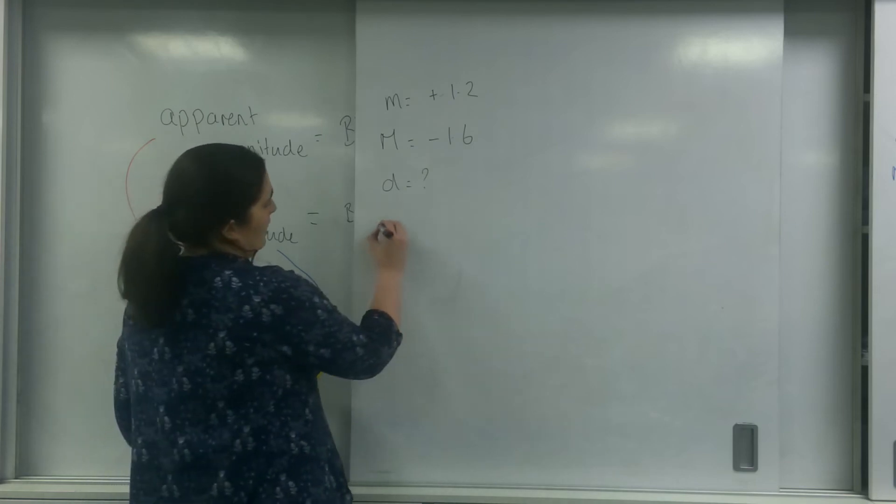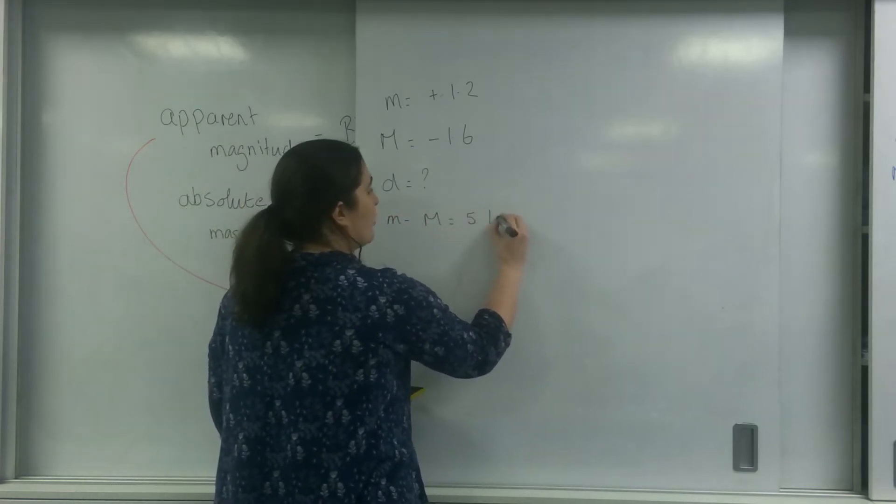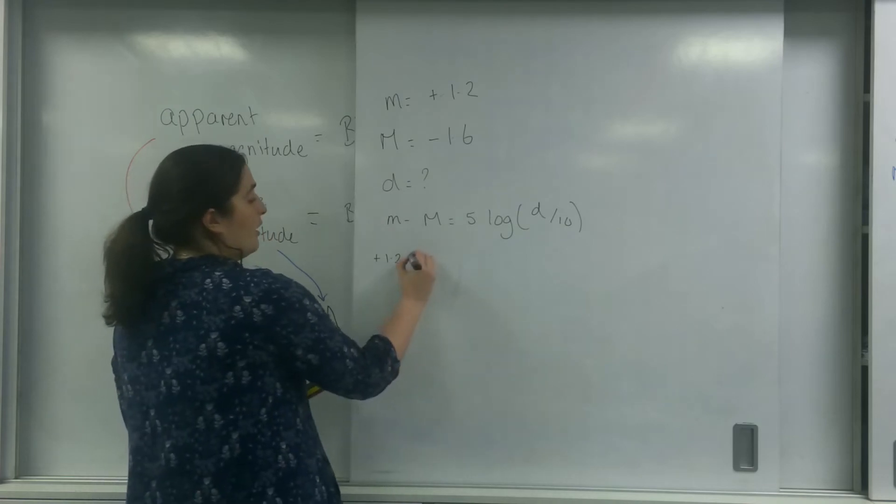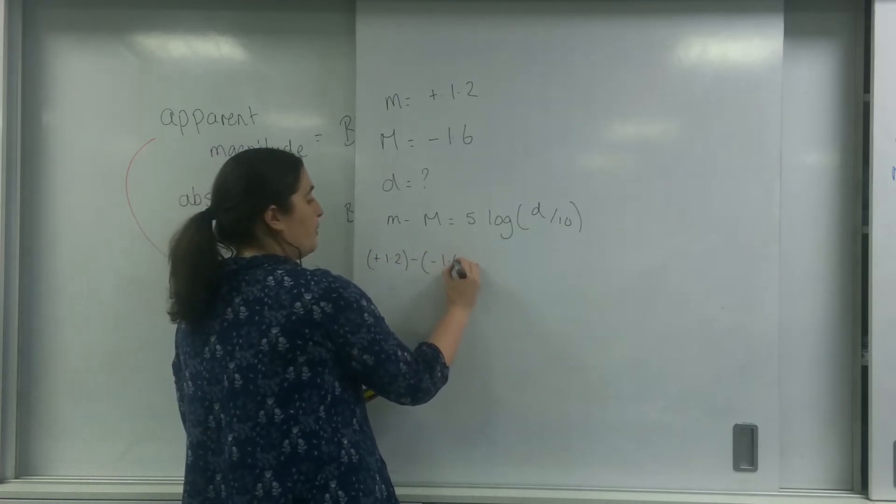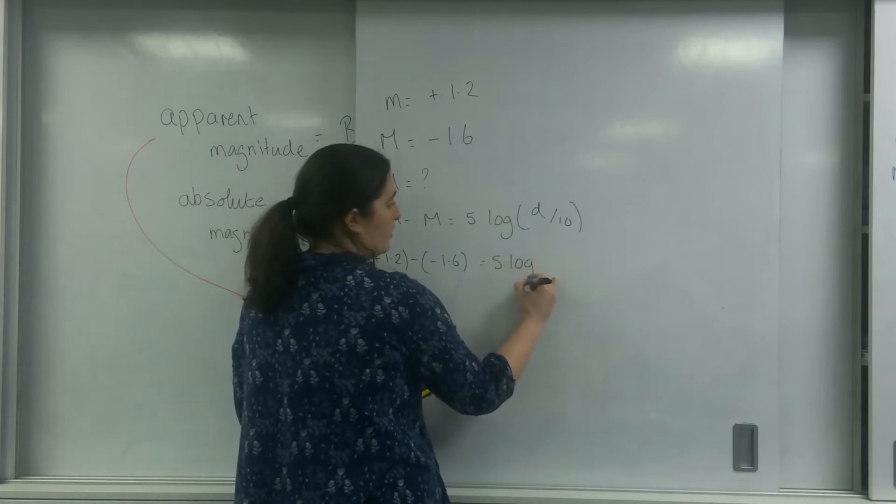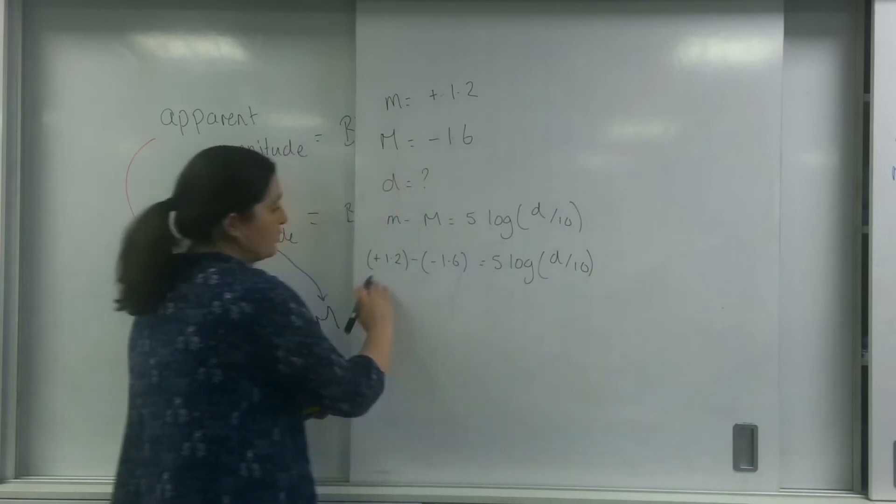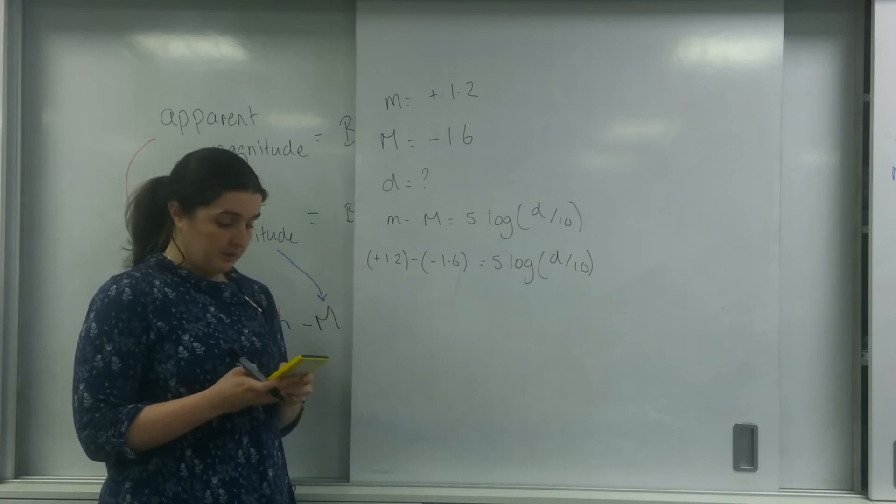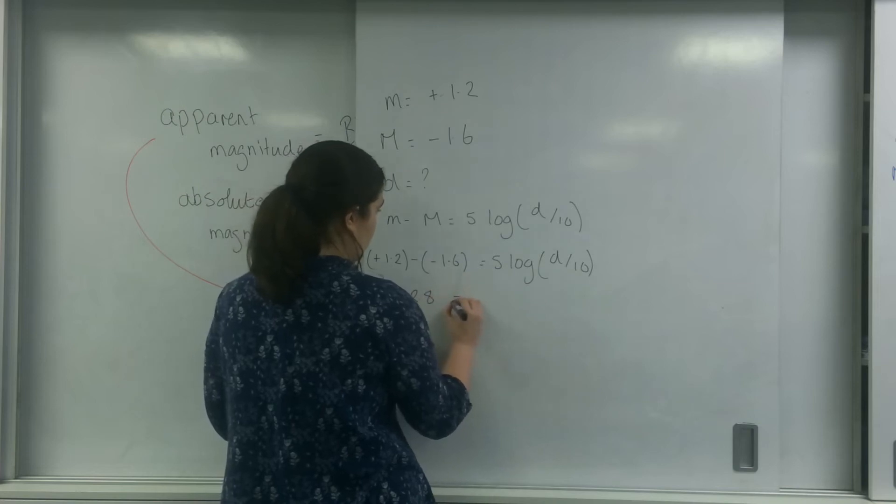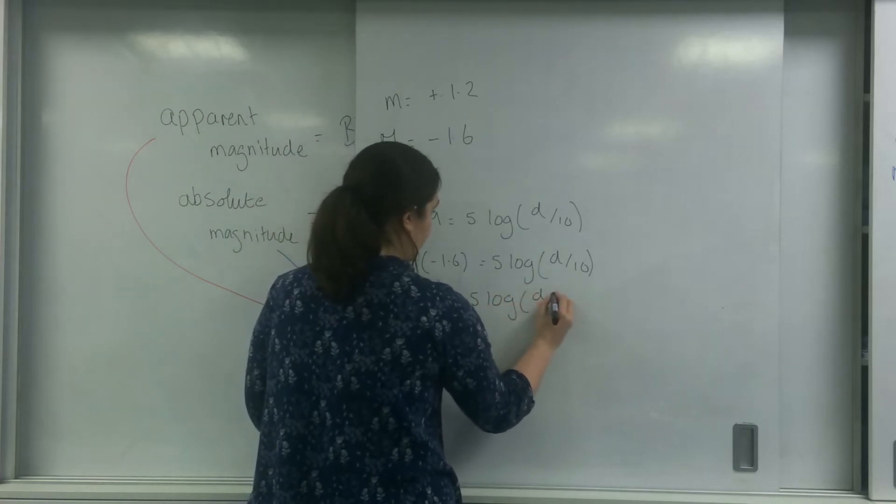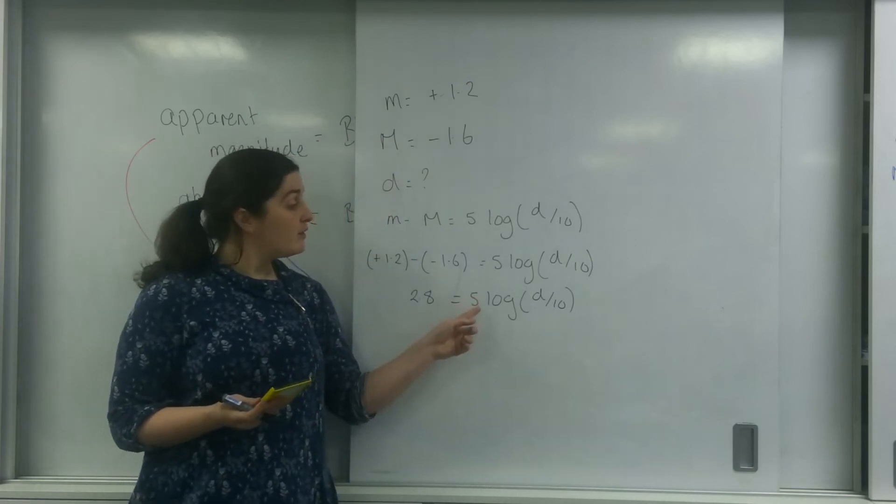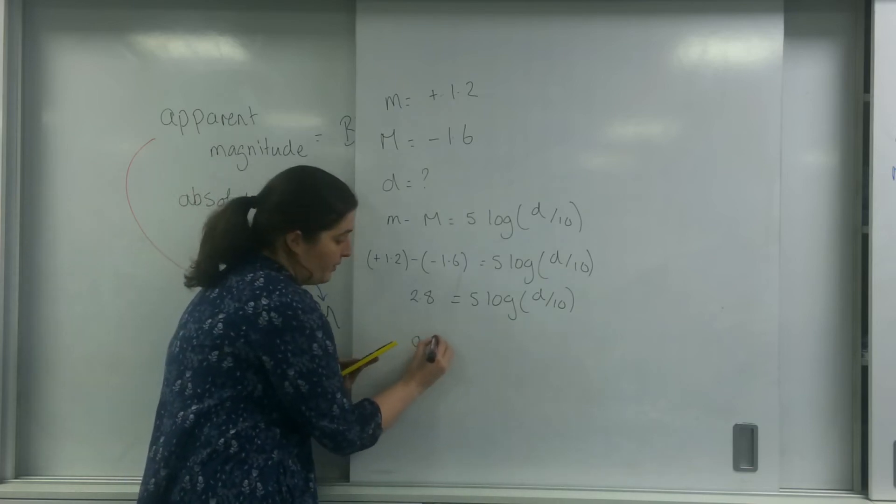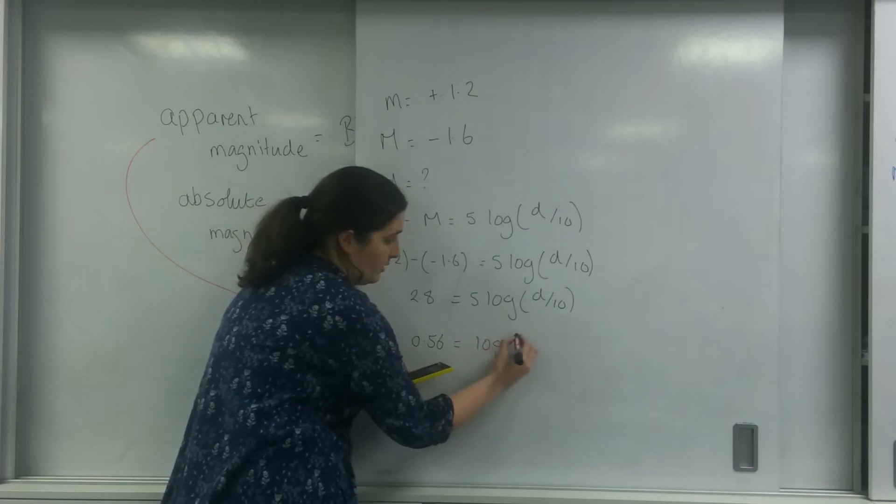So let's put this in. m minus big M equals 5 log d over 10. So plus 1.2 minus 1.6. 5 log d over 10. So I'm going to do that first. So it's plus 1.2 minus minus, so that comes with plus. So 1.2 plus 1.6 is 2.8. So before I do anything with this log, I've got to get rid of this 5. So it's 5 times log. So I'm going to end up with 0.56 equals log d over 10.